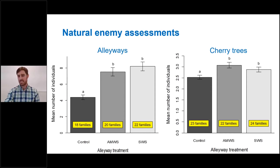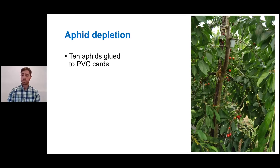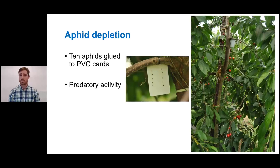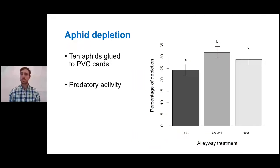In terms of pest control, as I worked in commercial orchards where growers applied pesticides killing most pests, I used sentinel aphid cards to determine the predatory activity of natural enemies. I glued 10 aphids and counted how many were depleted from these cards. Overall, we got a greater number of aphids depleted on cards that were in trees next to the wildflower strips — so wildflower strips enhanced and increased pest regulation services.